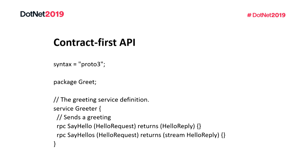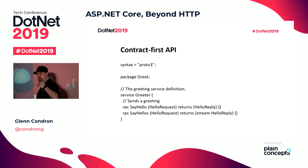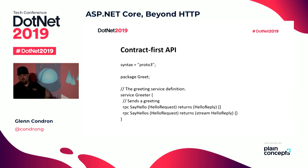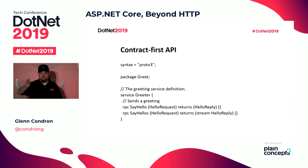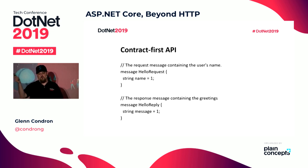This is a proto file. You say the version you're going to use. My package is called greet. I have a service called Greeter. It has two methods — SayHello and SayHellos. They each take a HelloRequest and return a HelloReply. The difference is the bottom one is streaming — that's how you say I want to stream results to you instead of just giving you one.